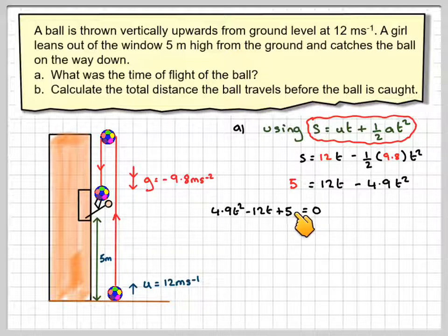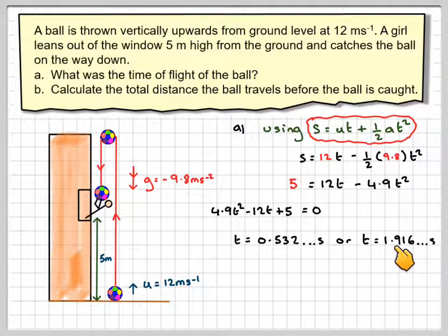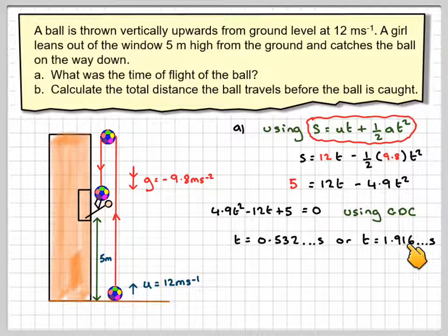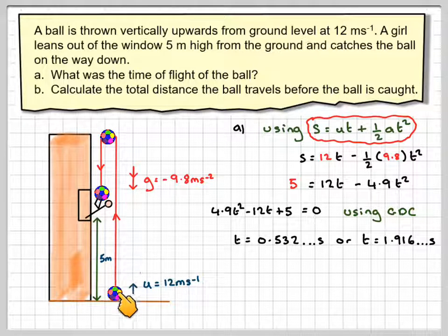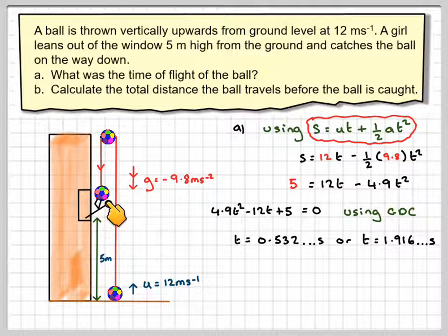Now you could use the formula, or in an A-level exam now you can use the graphics calculator, and you would get that t is equal to 0.532 or t is equal to 1.916. So this one is the one where it goes up, but this is the one that we actually want where it's going down.